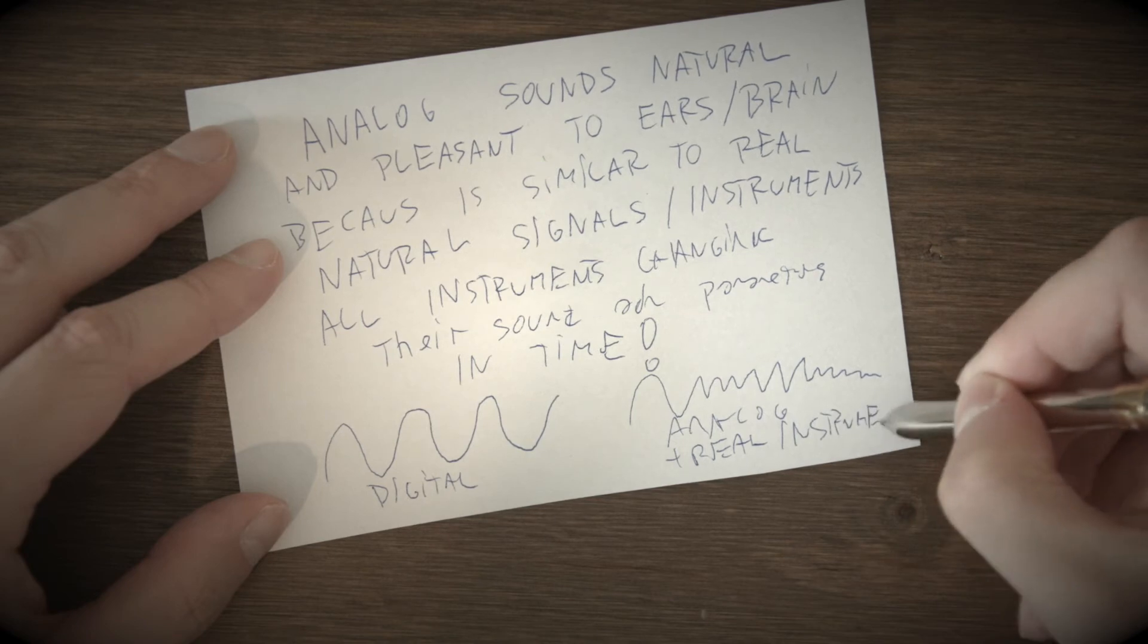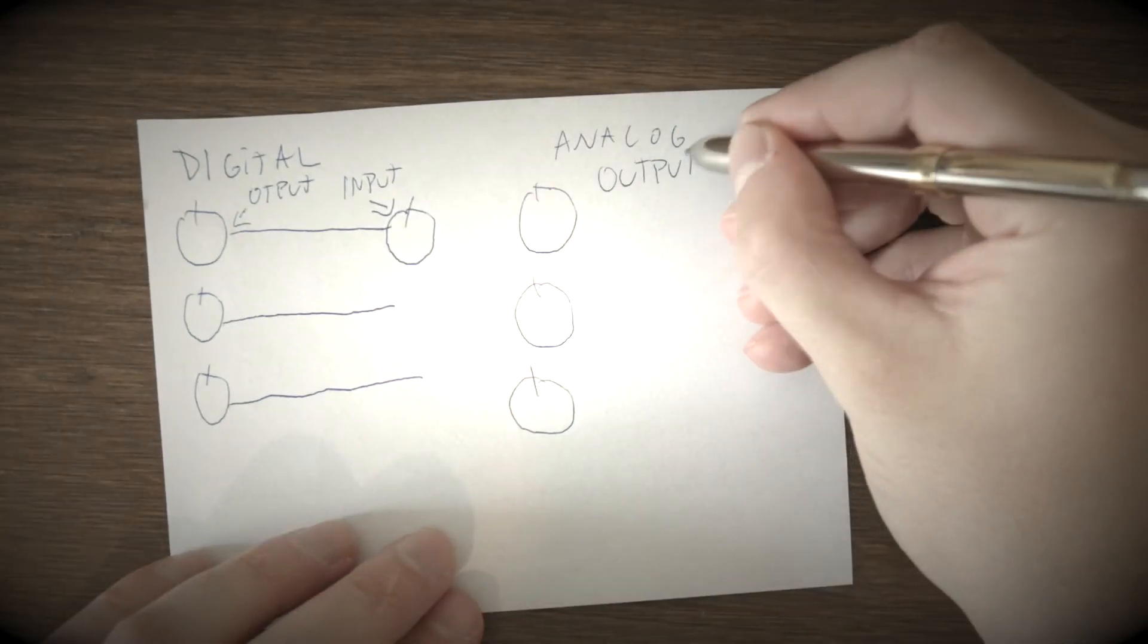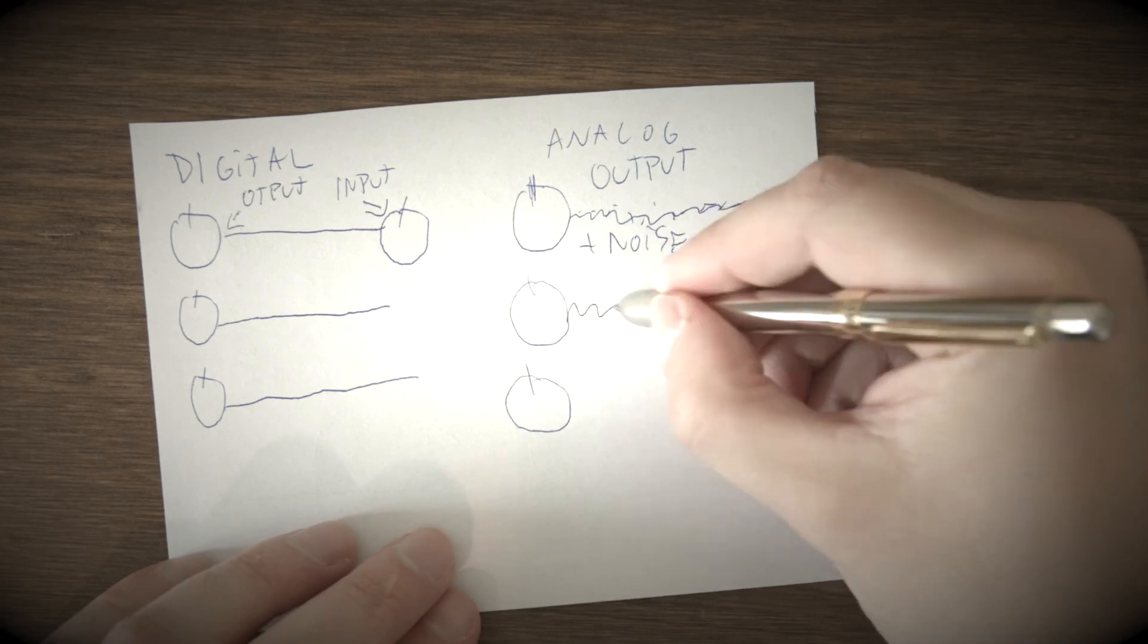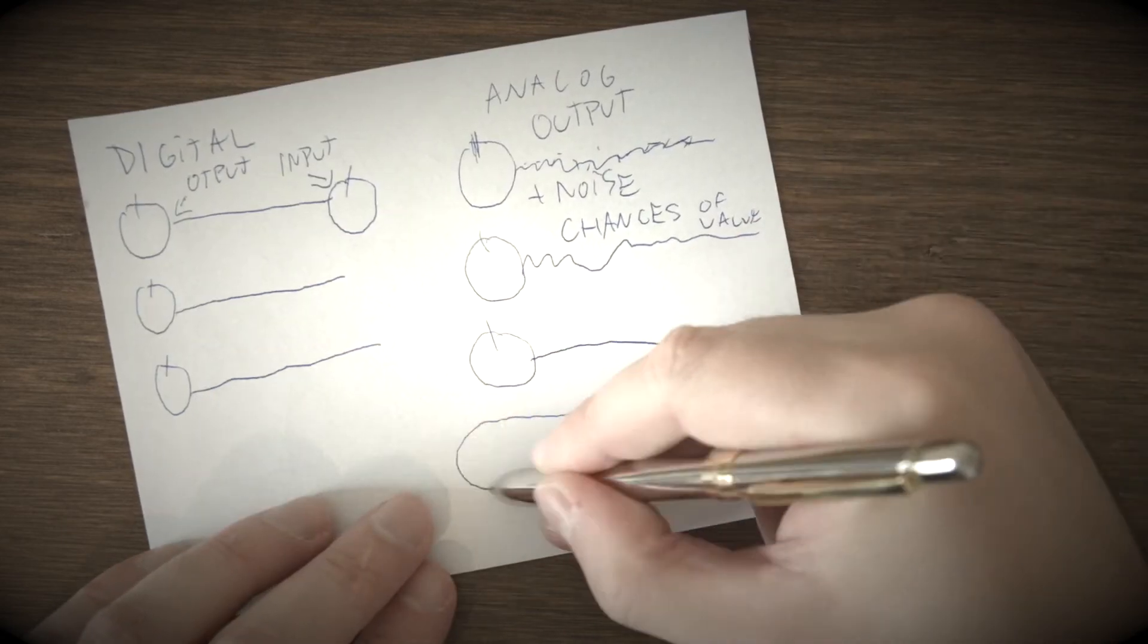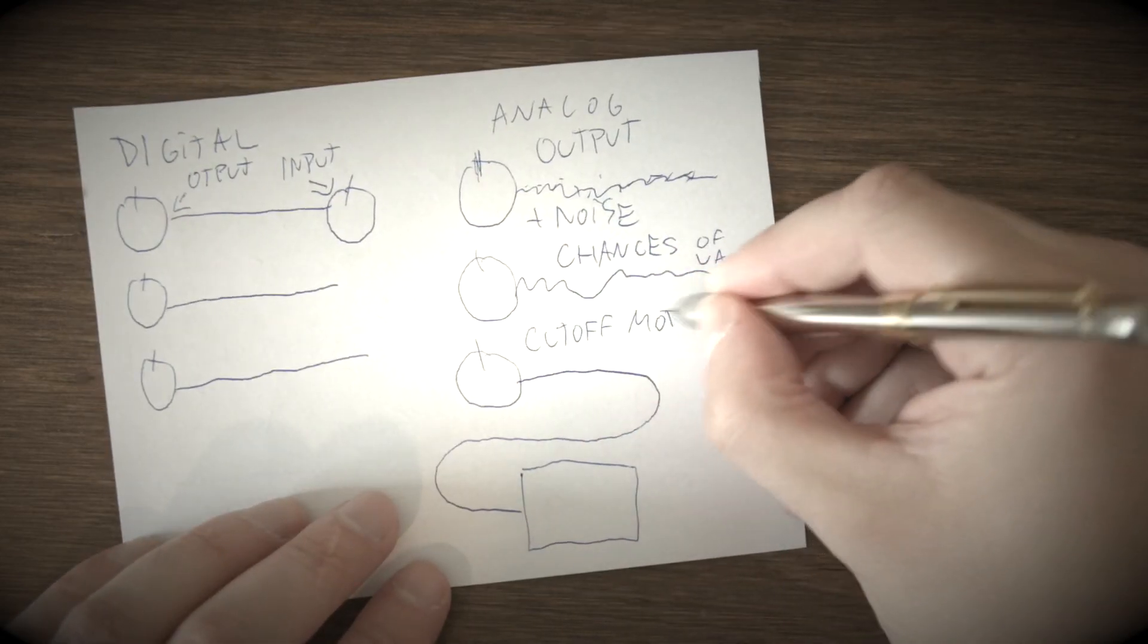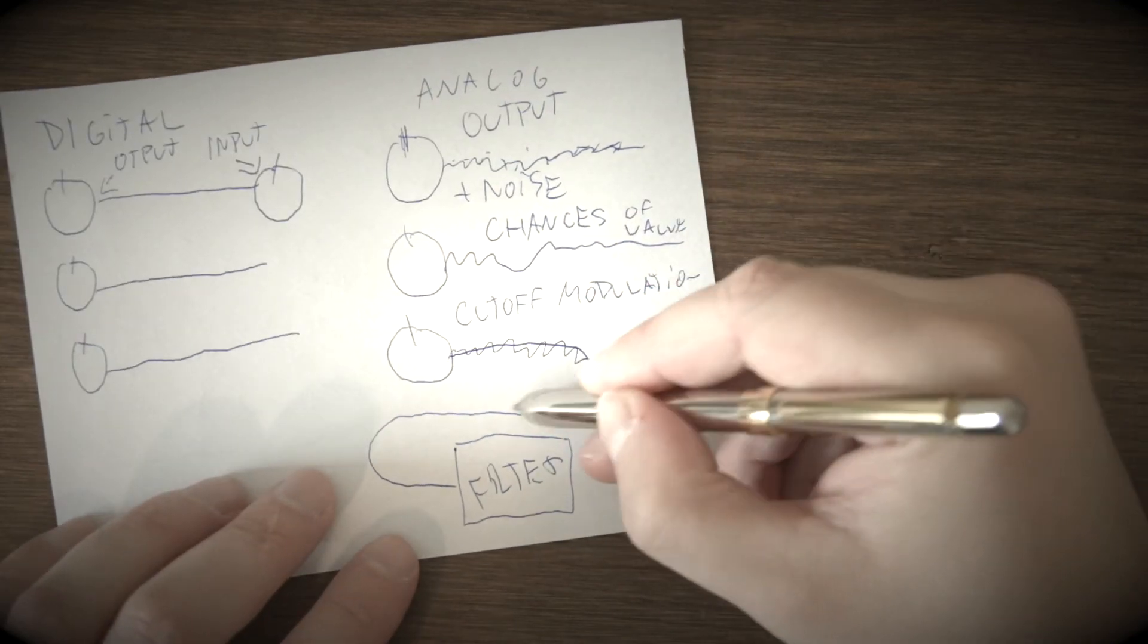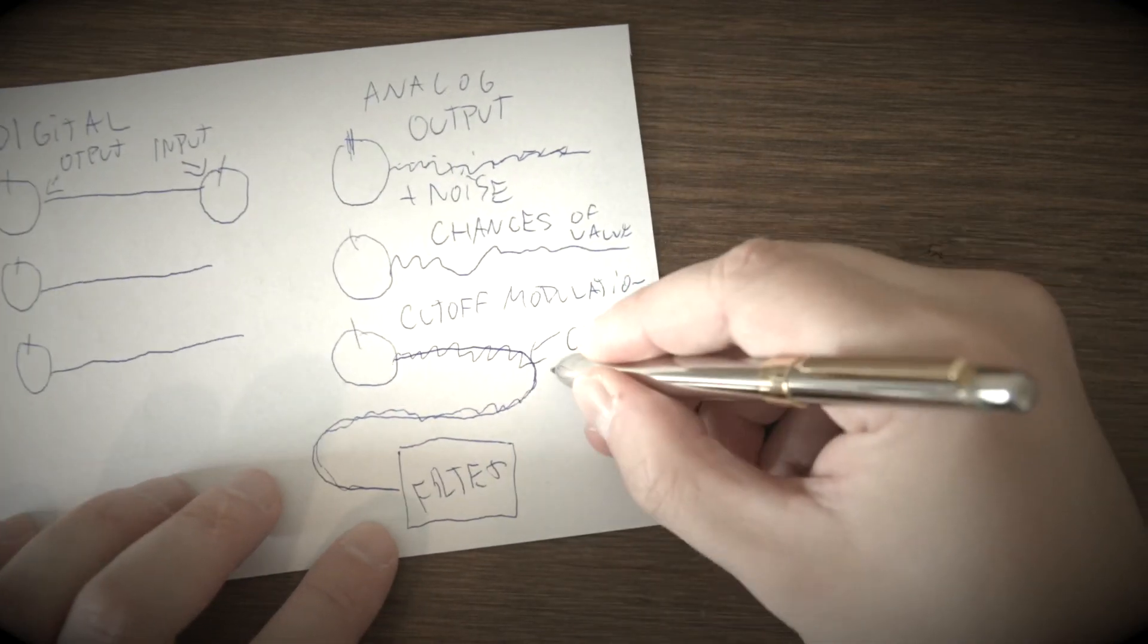While digital synthesizer or effect has all parameters static, analog device modulates other circuits with real voltage. Because of instability of electronic components, this voltage and parameters are always changing in time.